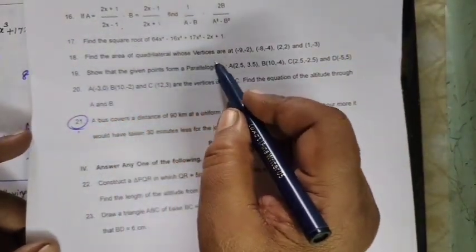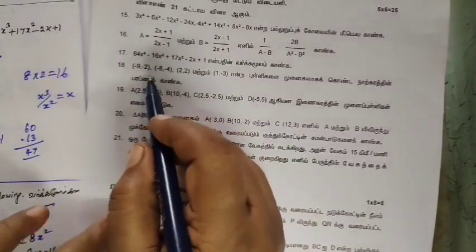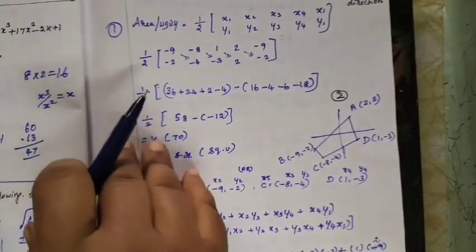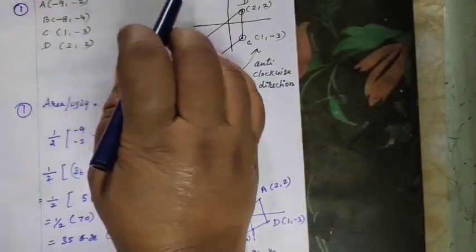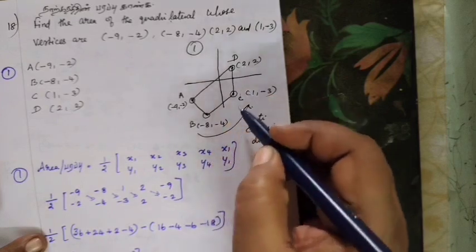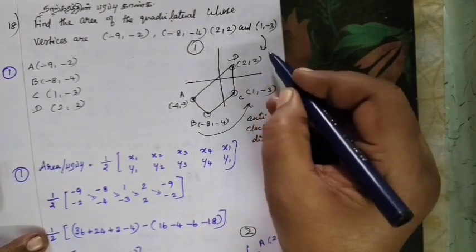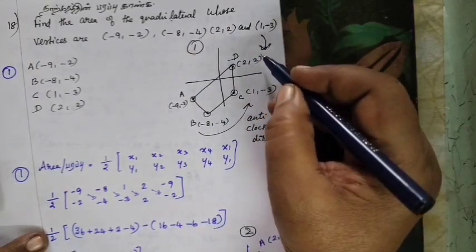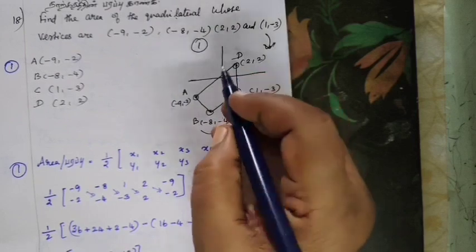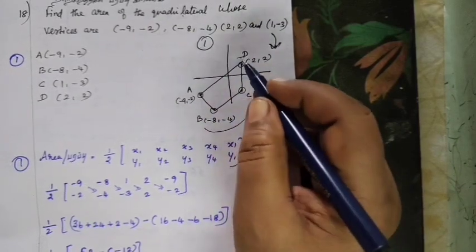Question number 18. Find the area of the quadrilateral whose vertices are. We add 4 vertices. Revision is very fast. We will write this first from the formula, and we will write this in the first part.